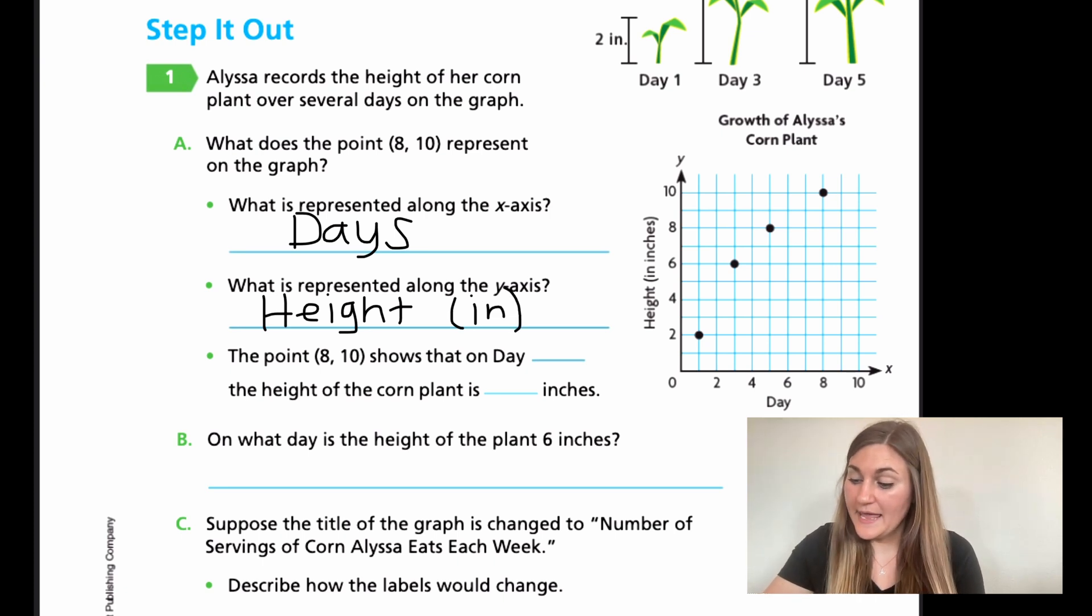Now it wants us to go to the point (8,10). That shows us that on the x-axis, the day would be first, because that's the x-axis, so that would be day 8, the first number. And the height of the corn plant is, well, the y-axis is at 10, so that would be 10 inches.